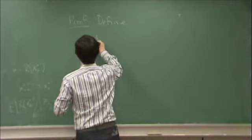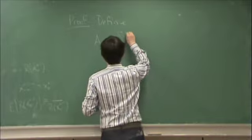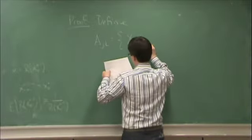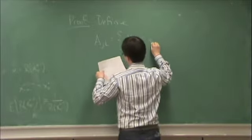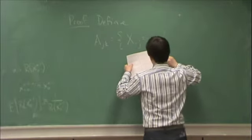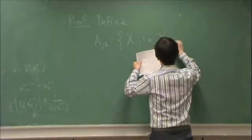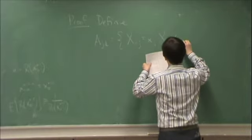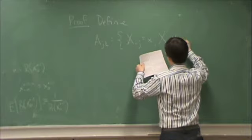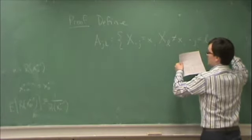Define A_j as the event that x_{-j} is equal to little x, x_l is not equal to x, not equal to little x, for -j < l < 0.